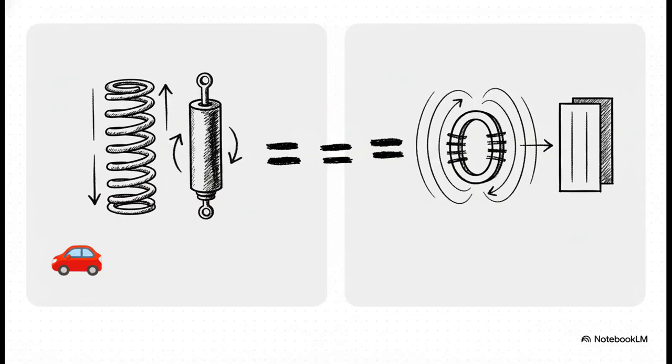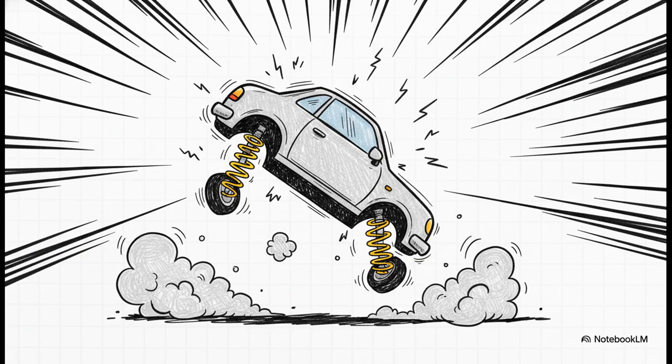The car's spring stores and releases energy. That's what makes it bounce. The inductor stores and releases electromagnetic energy, which creates an oscillation, an electronic bounce. The shock absorber's job is to control that bounce, to dampen it. And that's exactly what our capacitor does. It dampens the electronic oscillation. And all of a sudden, our experiment makes perfect sense.